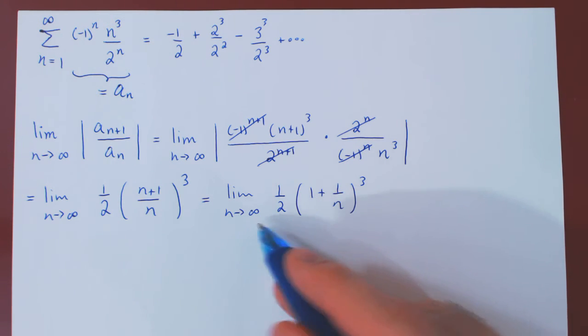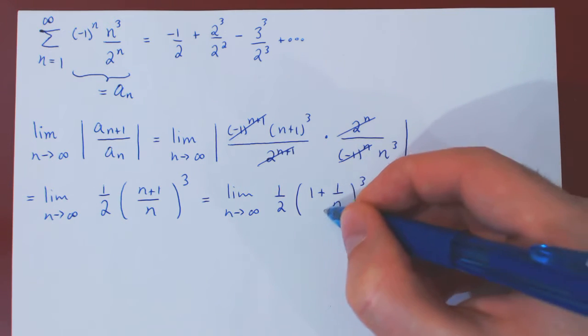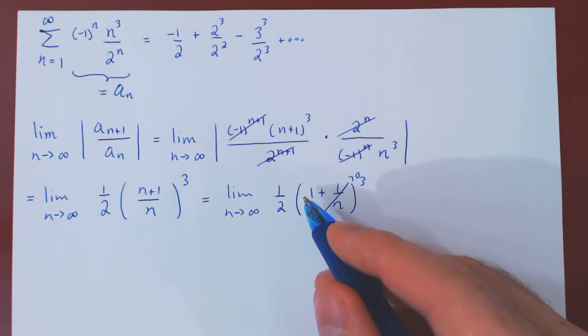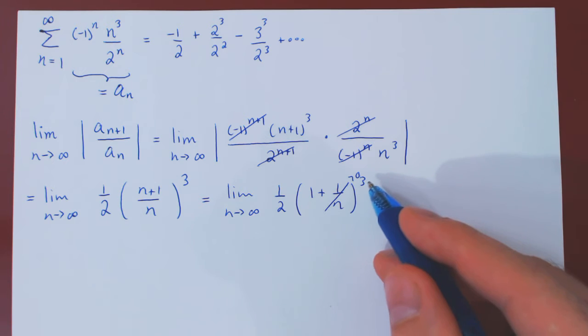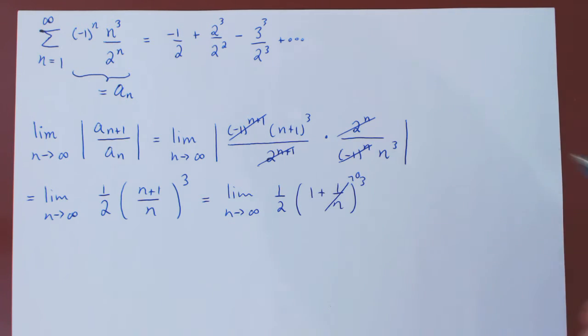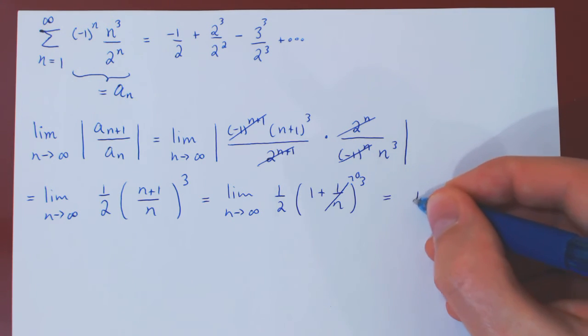Well, as n tends to infinity, 1 over n tends to 0, so we'll have here 1 cubed, which is 1, times 1/2, and the limit therefore is simply 1/2, which is clearly less than 1.